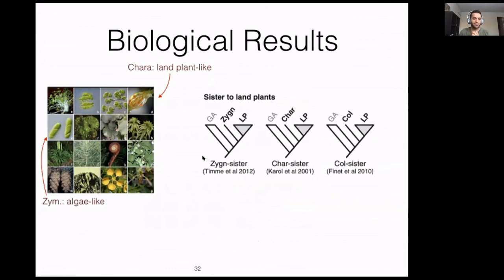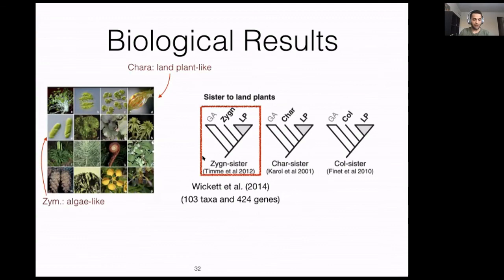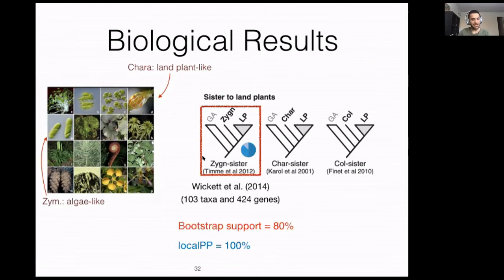Returning to the biological example of land plants: Wickett et al. published a paper using about 100 taxa and 400 genes. Inside their data, the topology where Zygnematales is the sister to land plants was observed more than 50% of the time. The bootstrap support was 80%, and local posterior probability was 100%, meaning this topology is more justifiable based on local posterior probability.